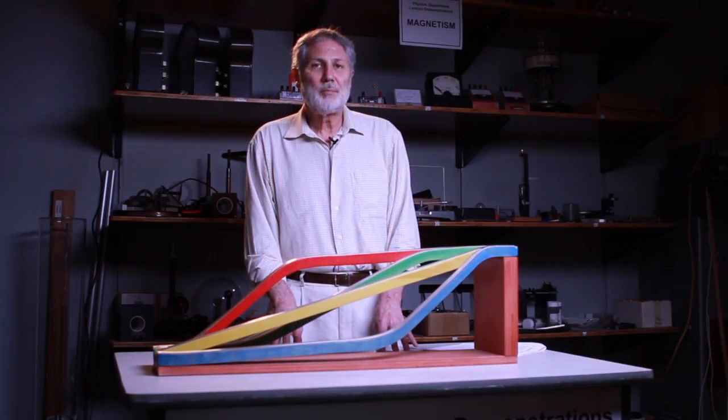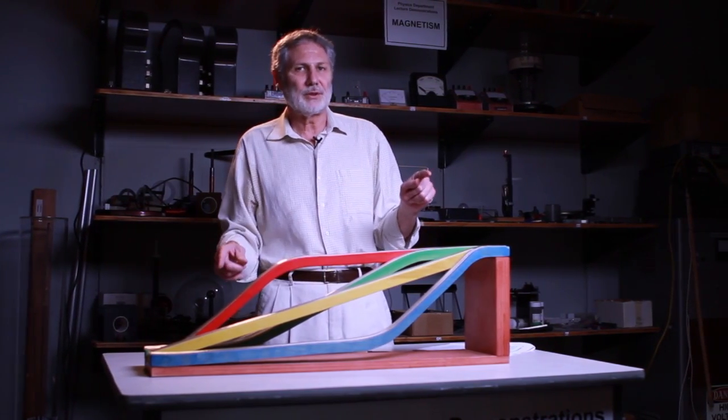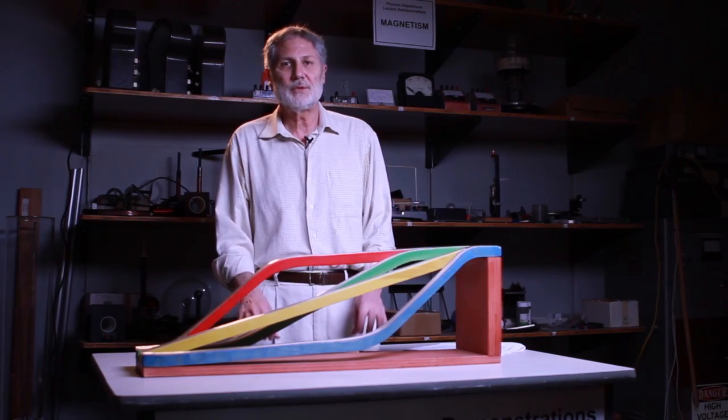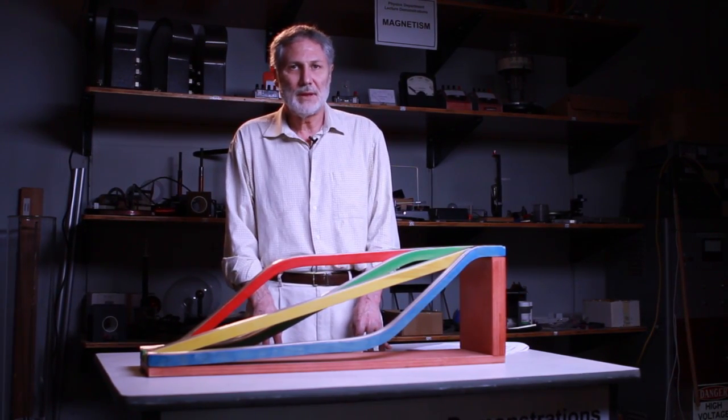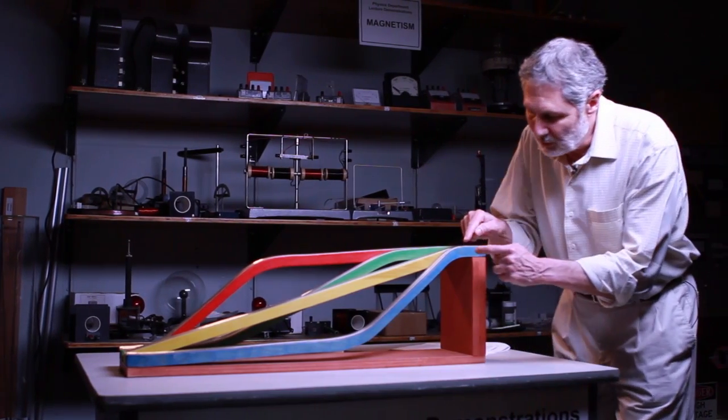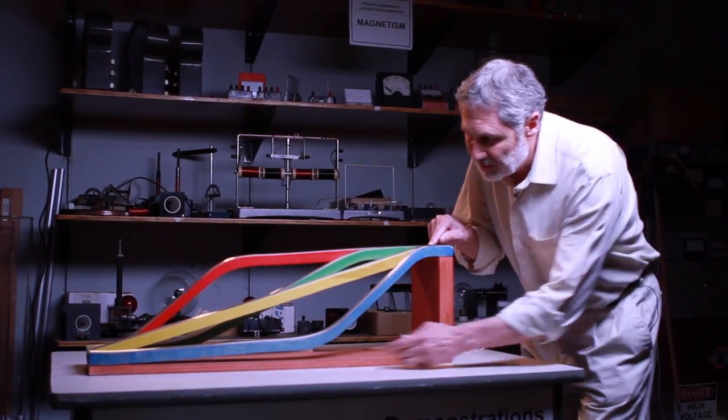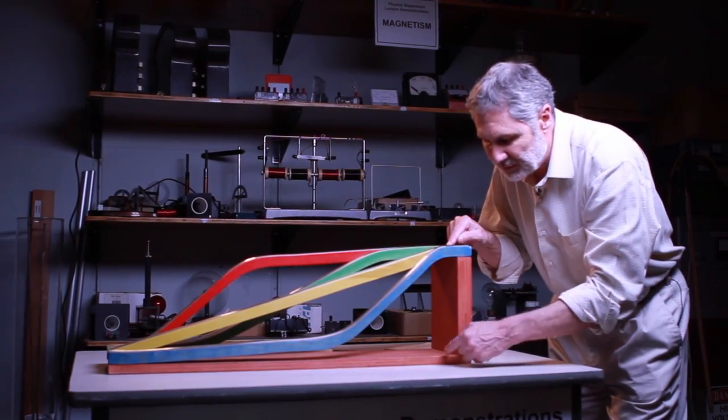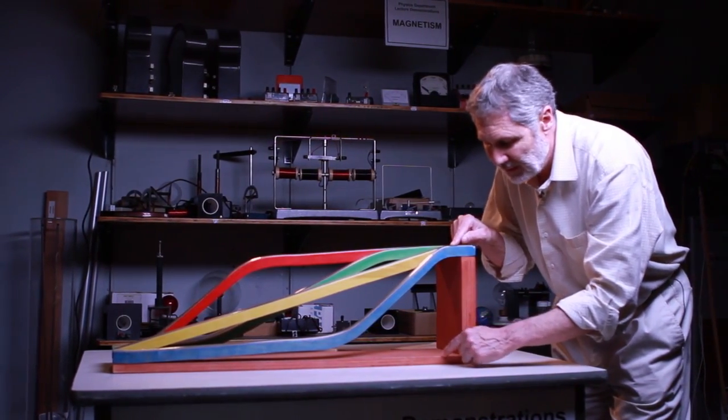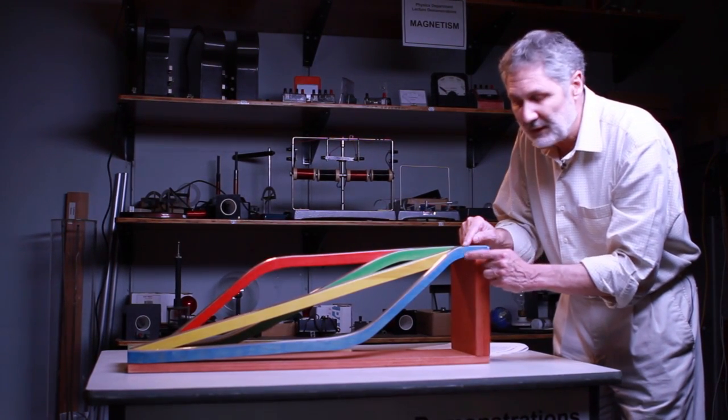Of all possible curves, not just the four in the apparatus, which one yields the shortest time? This is the famous Brachistochrone problem. A reasonable guess is that you want to have a path that goes vertically downward to the same elevation as the end point, and then there's a small rounded section here.